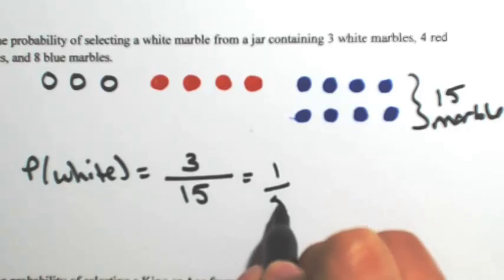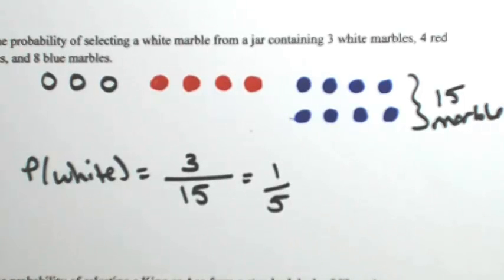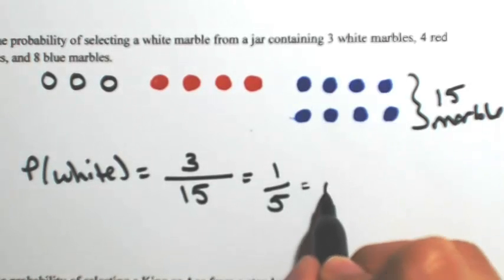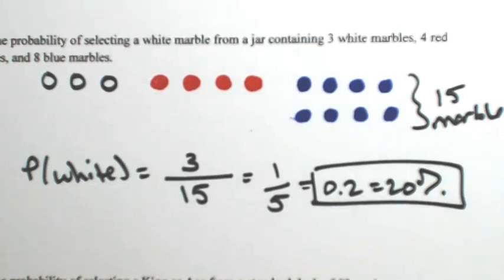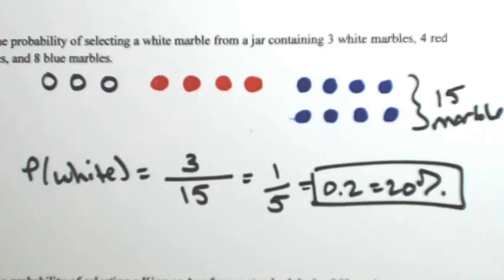You can reduce it if you want. I'm just going to look for the decimal. One out of five is the same as 20%, so 0.2. A 20% chance of getting a white marble.